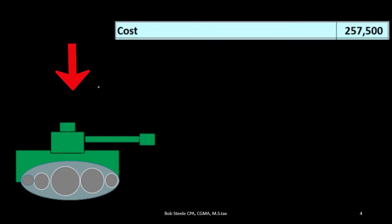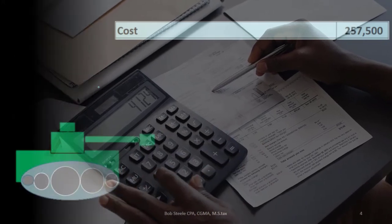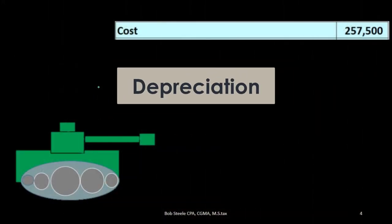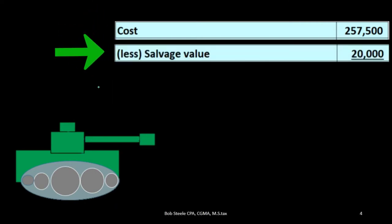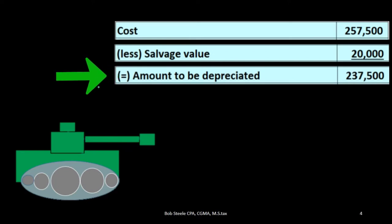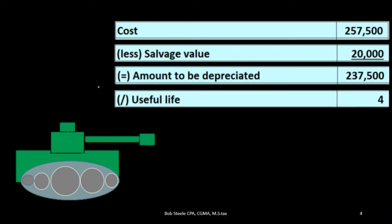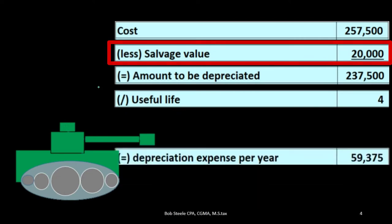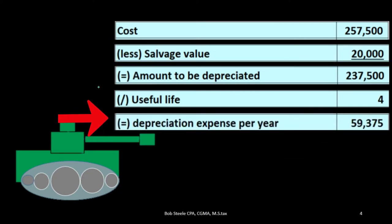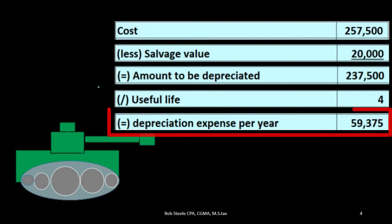The most straightforward way to allocate depreciation is the straight-line method, where we take the cost and subtract the salvage value — what we think the asset will be worth after its useful life. That gives us the amount to be depreciated over the useful life, which we're saying is four years. At the end of four years, we believe the tank will have a salvage value of $20,000. Straight-line depreciation over the four-year useful life would be $59,375 per year — that's our baseline.